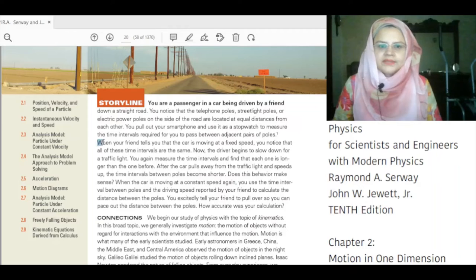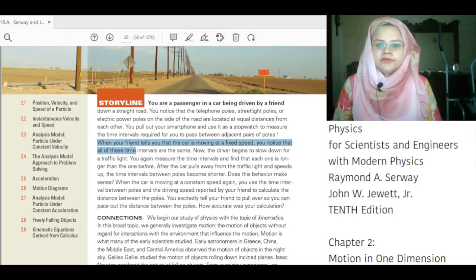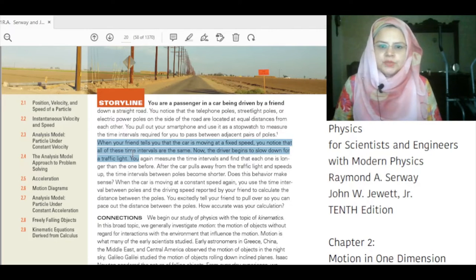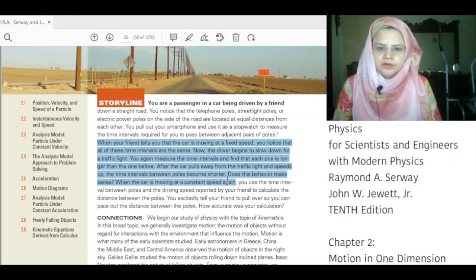When your friend tells you that the car is moving at a fixed speed, you notice that all of these time intervals are the same. Now the driver begins to slow down for a traffic light. You again measure the time interval and find that each one is longer than the one before. After the car pulls away from the traffic light and speeds up, the time interval between the poles becomes shorter. Does this behavior make sense?